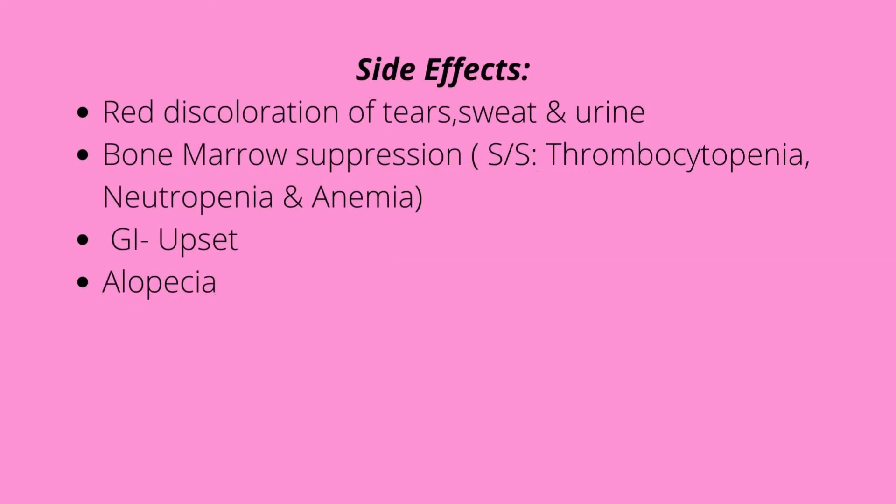Side effects of doxorubicin include red discoloration of body fluids — red discoloration of tears, sweat, as well as urine. You will also experience bone marrow suppression, with signs and symptoms including thrombocytopenia, neutropenia, and anemia, as well as GI upset and alopecia.